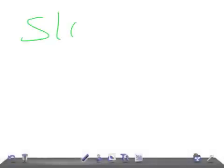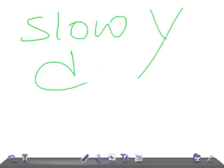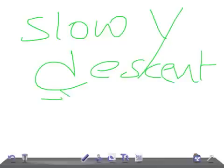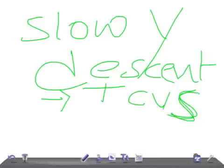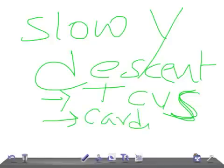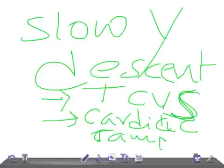Slow Y descent. Where do you see it? It is nothing but tricuspid stenosis. The Y wave is a negative wave — it is the opening of the tricuspid valve. You see slow Y descent in tricuspid stenosis or cardiac tamponade. Cardiac tamponade is the accumulation of fluid or blood in the pericardial cavity, increasing congestion and pressure over the heart, causing the slow Y descent.